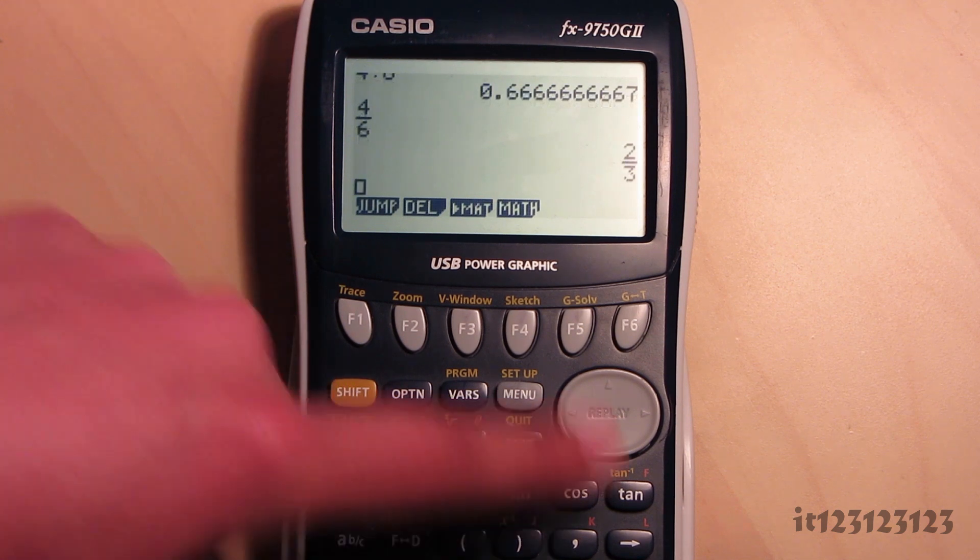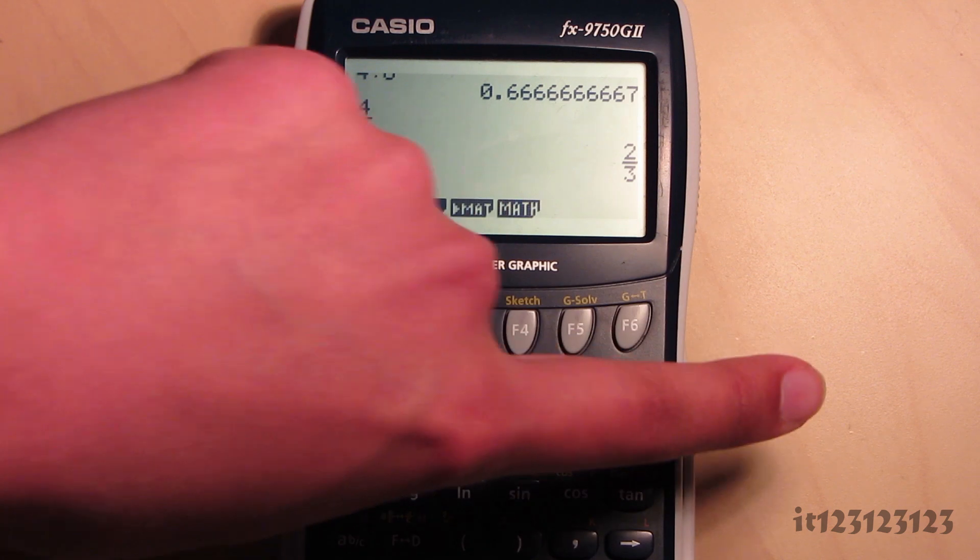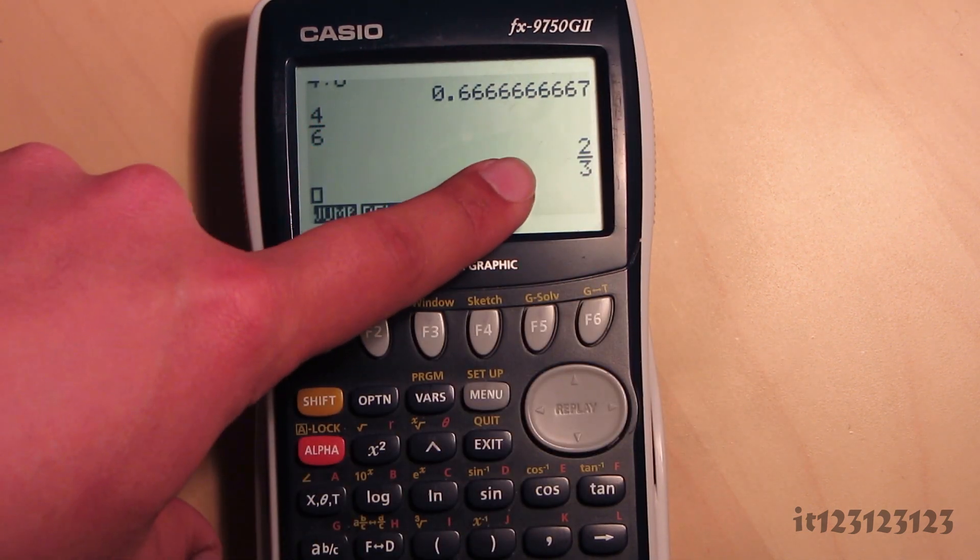So now we've got 4 divided by 6. And because we've put it in as a natural display, we get it out as a natural display, simplified. There we go, two thirds there.